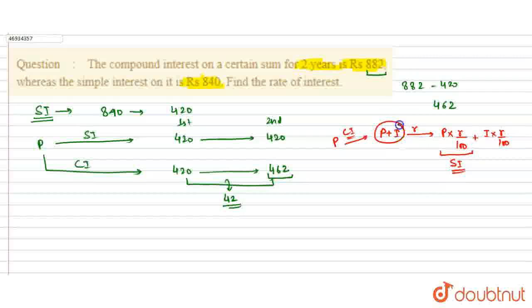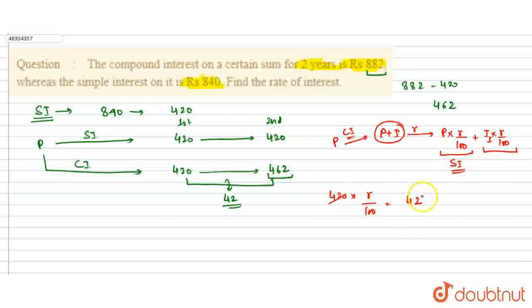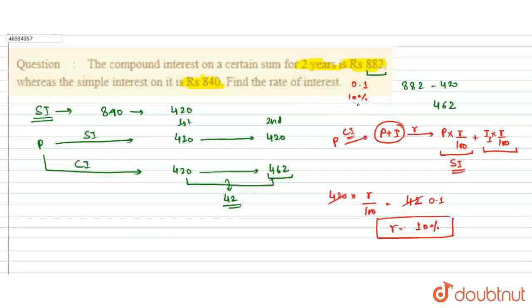क्योंकि जो interest आया वो P into R by 100 और I into R by 100 है। पहले साल में interest आया था 420, और R percent का rate of interest लगा। उसका increment हुआ मेरा 42 का। तो 420 into R by 100 = 42, जिससे R की value 0.1 आती है। तो R मेरा 10 percent आ जाता है — यानि कि rate of interest 10% है।